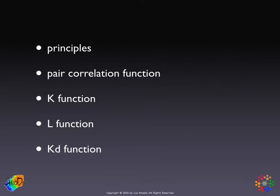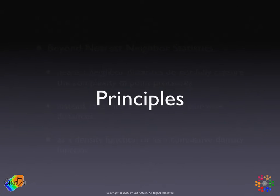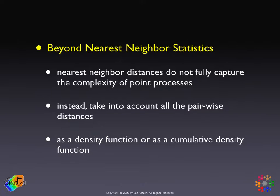Before we go into the specific statistics, I'll discuss some general principles behind this approach. We're moving beyond just the nearest neighbor statistic. The rationale is that nearest neighbor distances, because they're just one out of all the possible pairs of distances for each given event, do not fully capture the complexity of the point processes. The other approach is to look at the distribution of all the distances and relate that distribution to what it would be under complete spatial randomness.